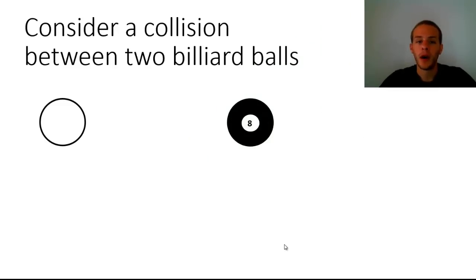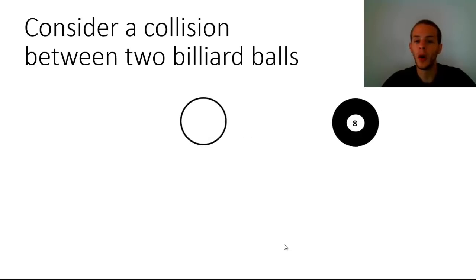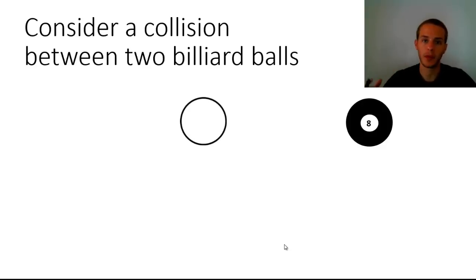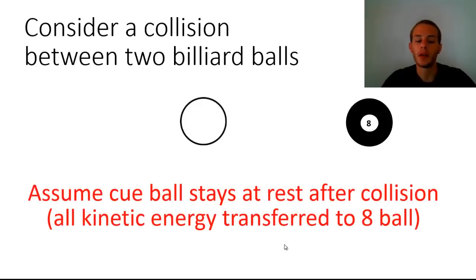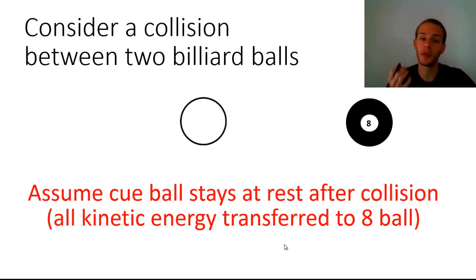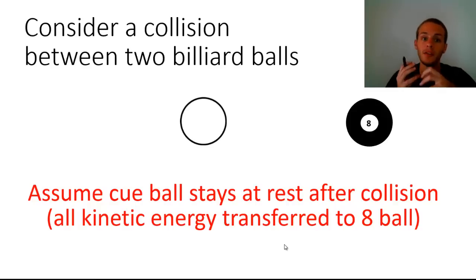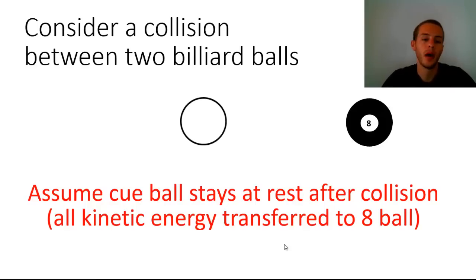To get a better idea of state versus path functions, let's consider a collision between two billiard balls — specifically where the cue ball slams into the eight ball. We're going to assume that the cue ball immediately stops after the collision, implying that all of its kinetic energy has been transferred to the eight ball. So the kinetic energy of the cue ball after the collision is zero — it's completely at rest. The cue ball will be our system throughout these examples.